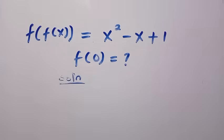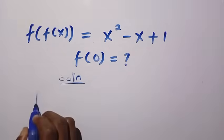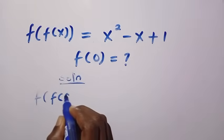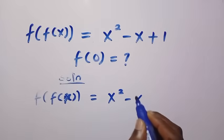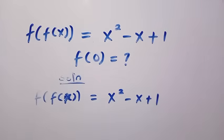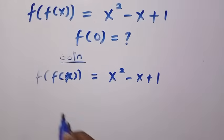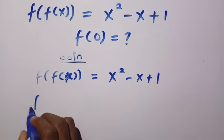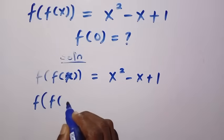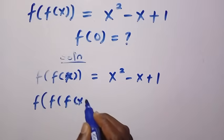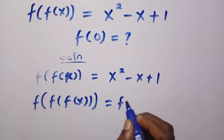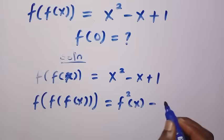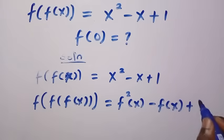If you consider the solution from here, the equation says f of f of x equals x squared minus x plus 1. Let's introduce f to both sides. If I introduce the function to both sides, we have f of f of f of x. So this equals f squared of x minus f of x plus 1.